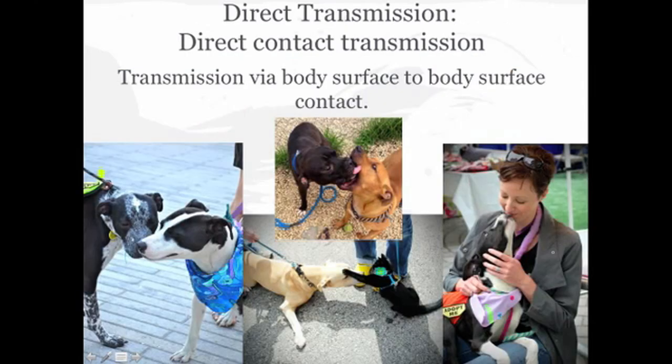First, let's talk about direct transmission. Direct transmission can be divided into direct contact transmission and droplet transmission. Direct contact transmission requires body surface to body surface contact between either animals of the same species or animals of different species. It's important to note that humans are also considered a different species, especially in the case of zoonotic diseases.